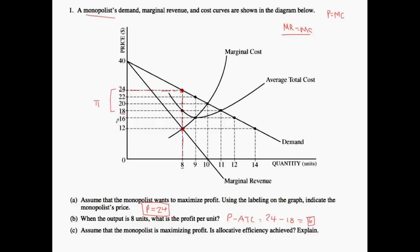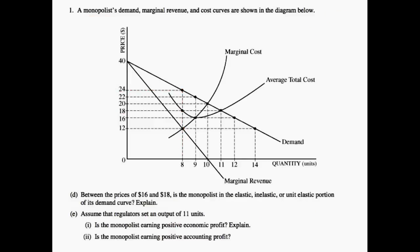Now let's look at part C. Assume that the monopolist is maximizing profit — is allocative efficiency achieved? We know that price is not set equal to marginal cost like in the allocatively efficient scenario, and therefore the monopolist is not at the allocative efficient outcome, because price does not equal marginal cost. Instead, the monopolist, as we mentioned at the beginning of this question, is setting marginal revenue equal to marginal cost.